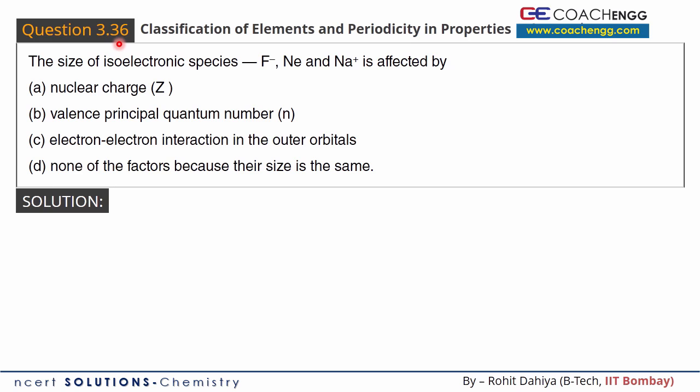Hello friends, I will now discuss question number 36 of the topic classification of elements. The size of isoelectronic species F minus, Ne, and Na plus is affected by.